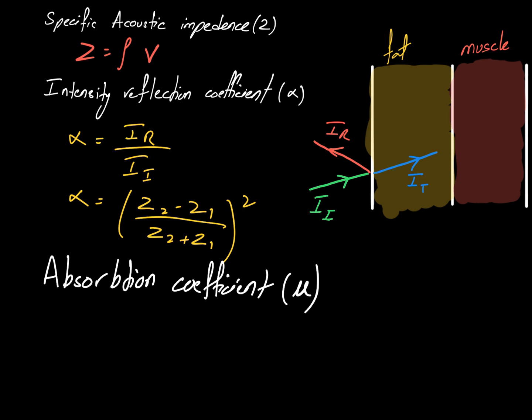The last terminology is the absorption coefficient, or mu. Whenever sound waves travel through a medium — whether air, bone, fat, muscle, or water — energy is lost over distance. To calculate the remaining intensity, we use the formula: I = I₀ × e^(−μx), where I is the intensity after the wave travels distance x, I₀ is the initial intensity, and mu is the absorption coefficient, which differs from medium to medium.